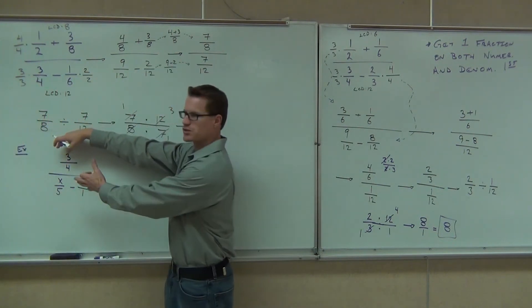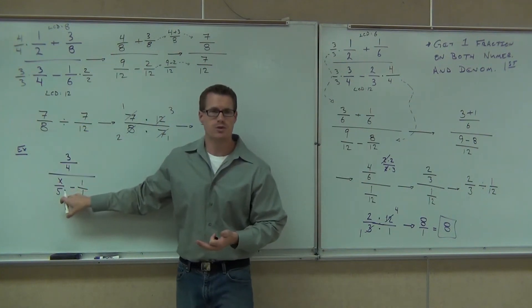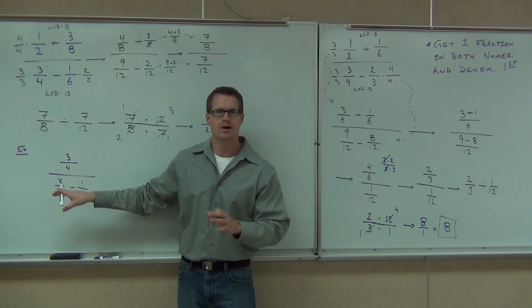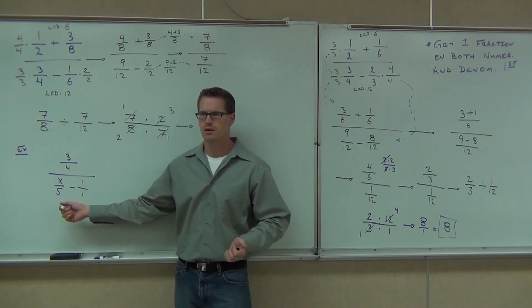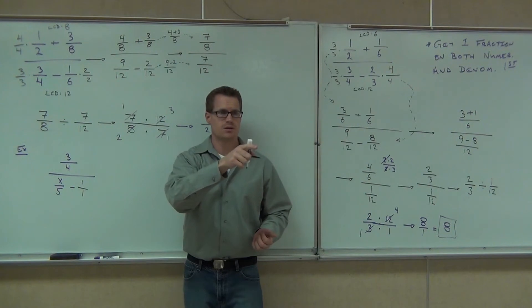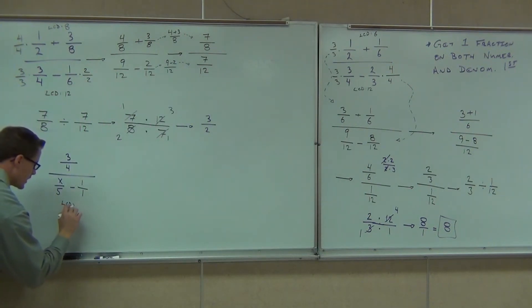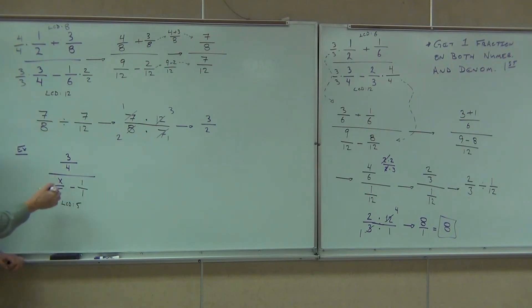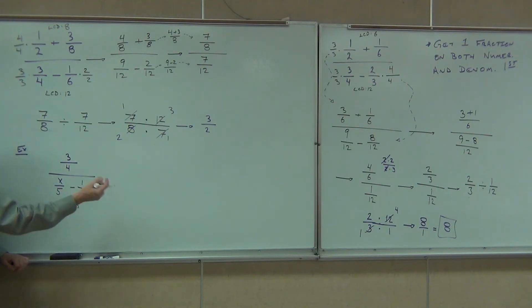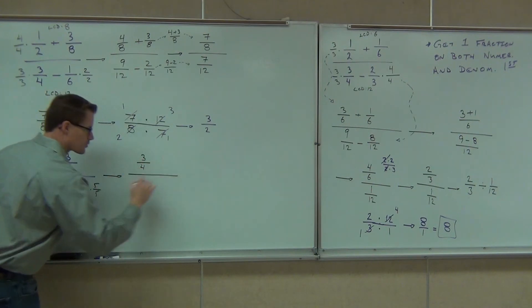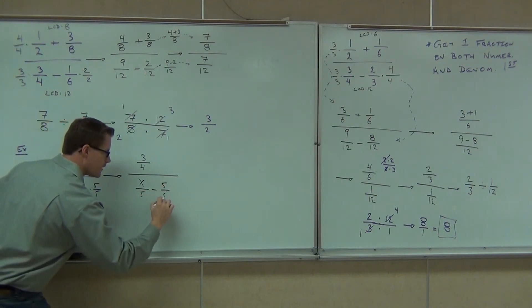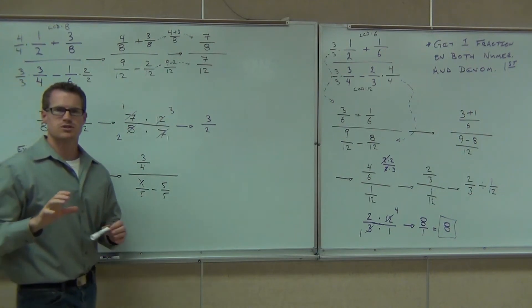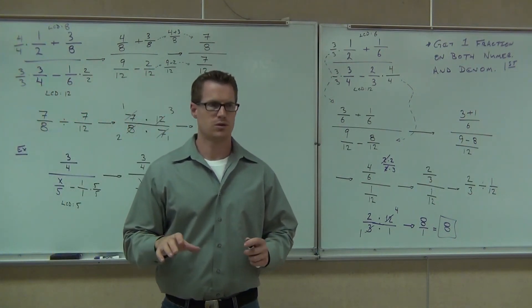So we're going to leave the numerator alone — we want just one fraction. The denominator, though, we need to combine those before we do anything else. We can't do a division problem until we get one fraction over one fraction. The LCD for the denominator is 5. We don't need to multiply the first fraction — it's already got the 5. We'll multiply the other by 5 over 5. So we have x over 5 minus 5 over 5.